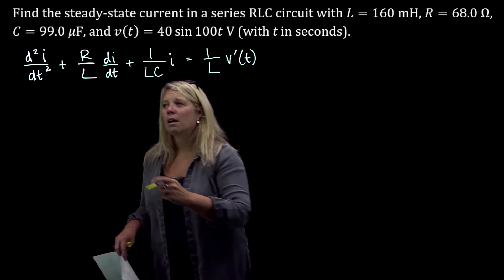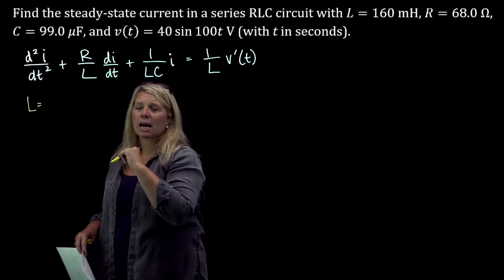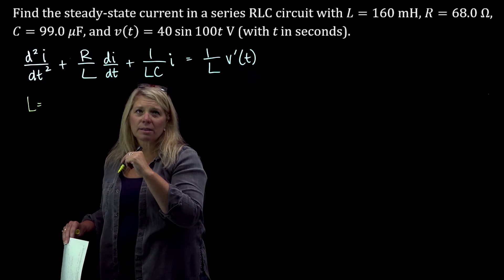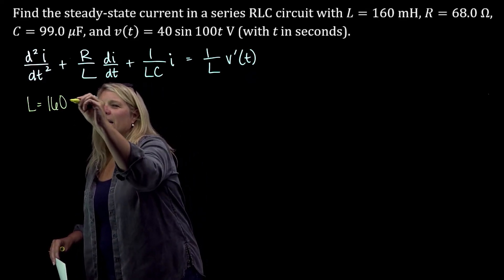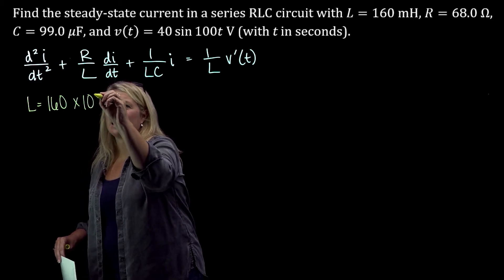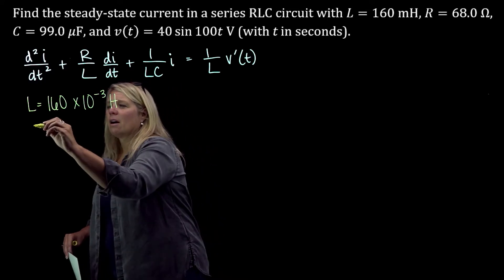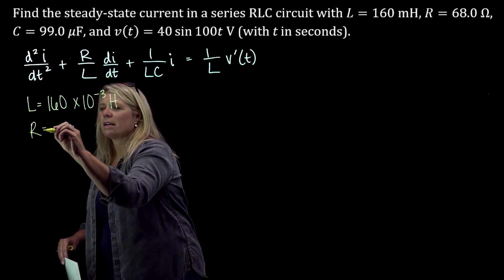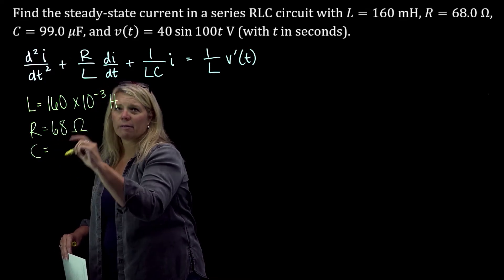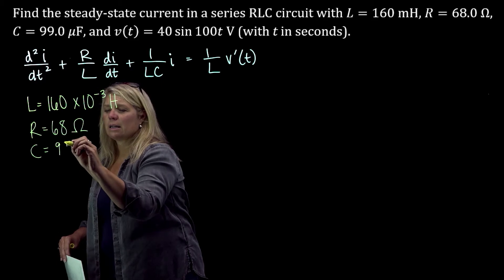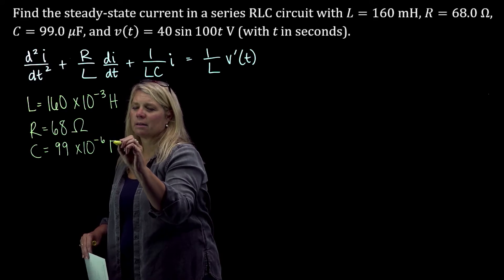milli and micro, on some of the units here. So I do need to be sure that I treat that appropriately. And so for L, we're given in the problem that L is 160 millihenrys. So I need to put that in henrys, though. So milli is times 10 to the negative 3. And let's see, we're given R is 68 ohms. So we'll just leave that as 68. And we're given that C is 99 microfarads. So times 10 to the negative 6 farads.